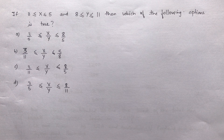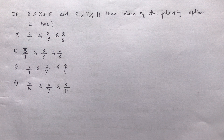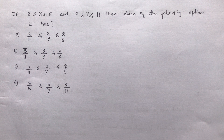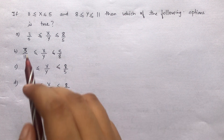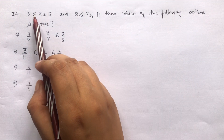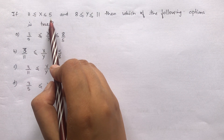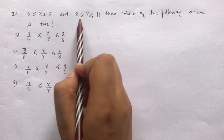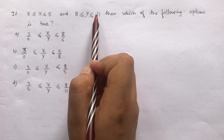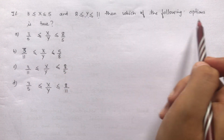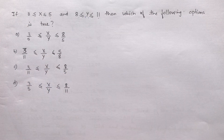Hello everyone, welcome to understanding calculations. This is the general aptitude part — the calculative part of GATE 2013. So the first question is: if 3 ≤ x ≤ 5 and 8 ≤ y ≤ 11, then which of the following options is true?